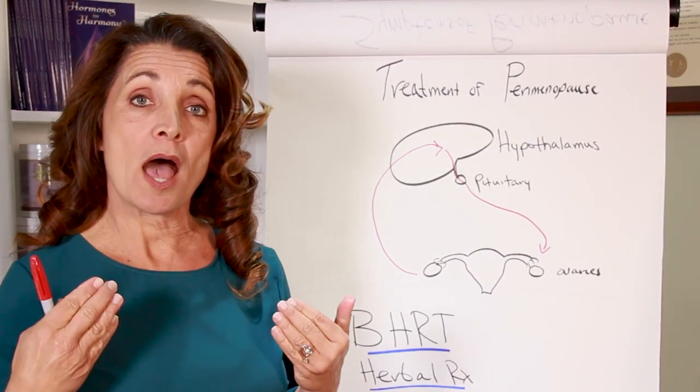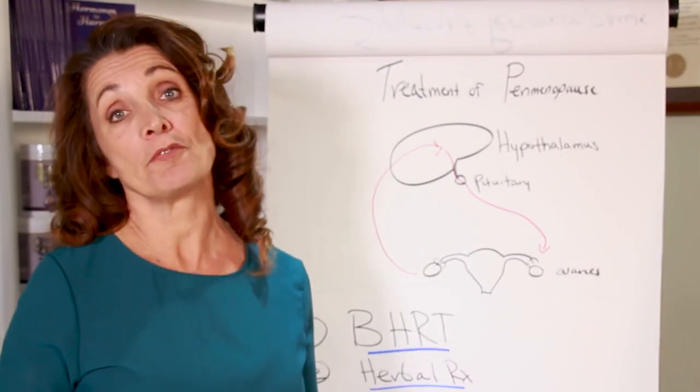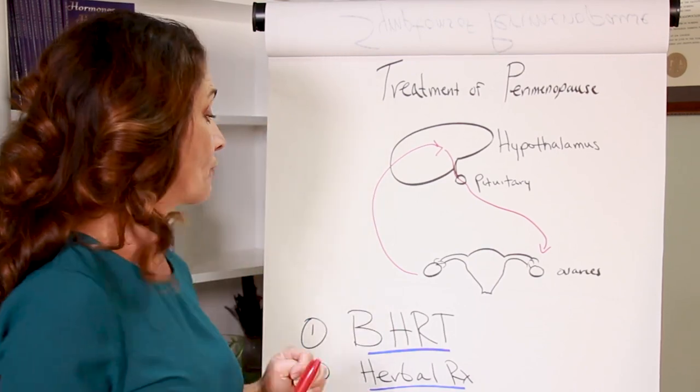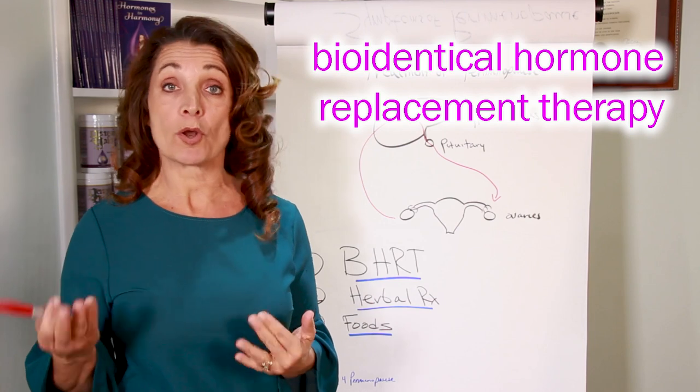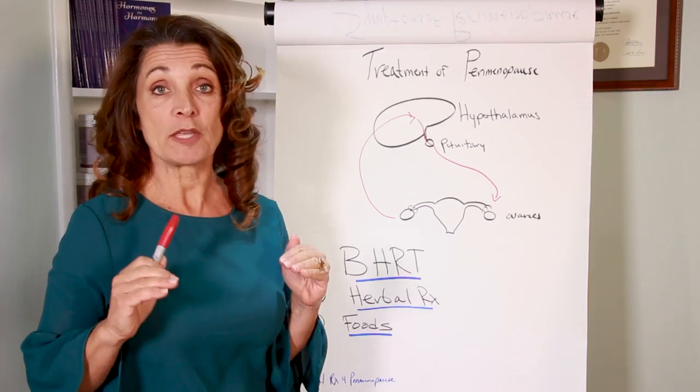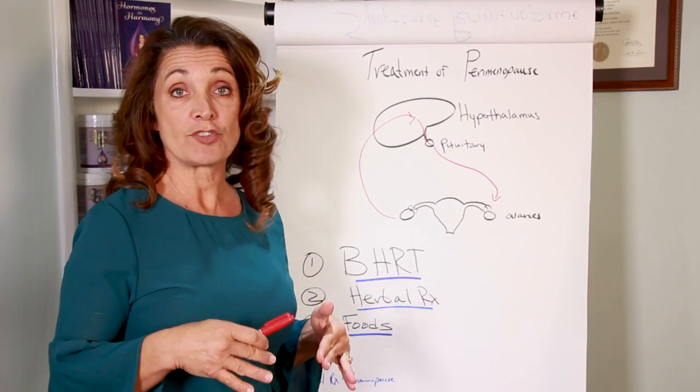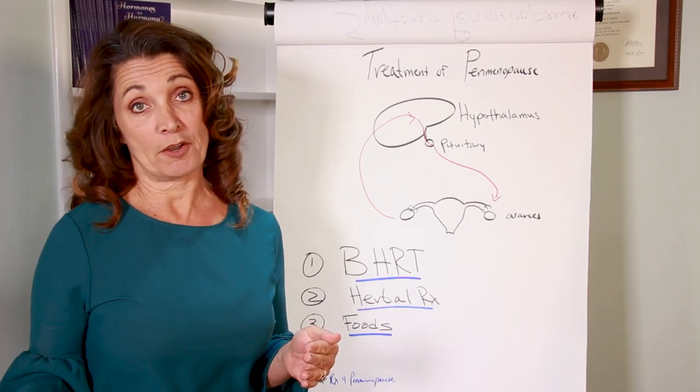So what can you do about perimenopause in terms of treating it, so that you can start to feel calm, back into balance, and start to get a little bit more regular? Well, the first thing I want you to consider is bioidentical hormone replacement therapy. That is always an option. It is not something you have to do, but you need to consider it. You can use natural progesterone as your first line of bioidentical hormone replacement therapy.